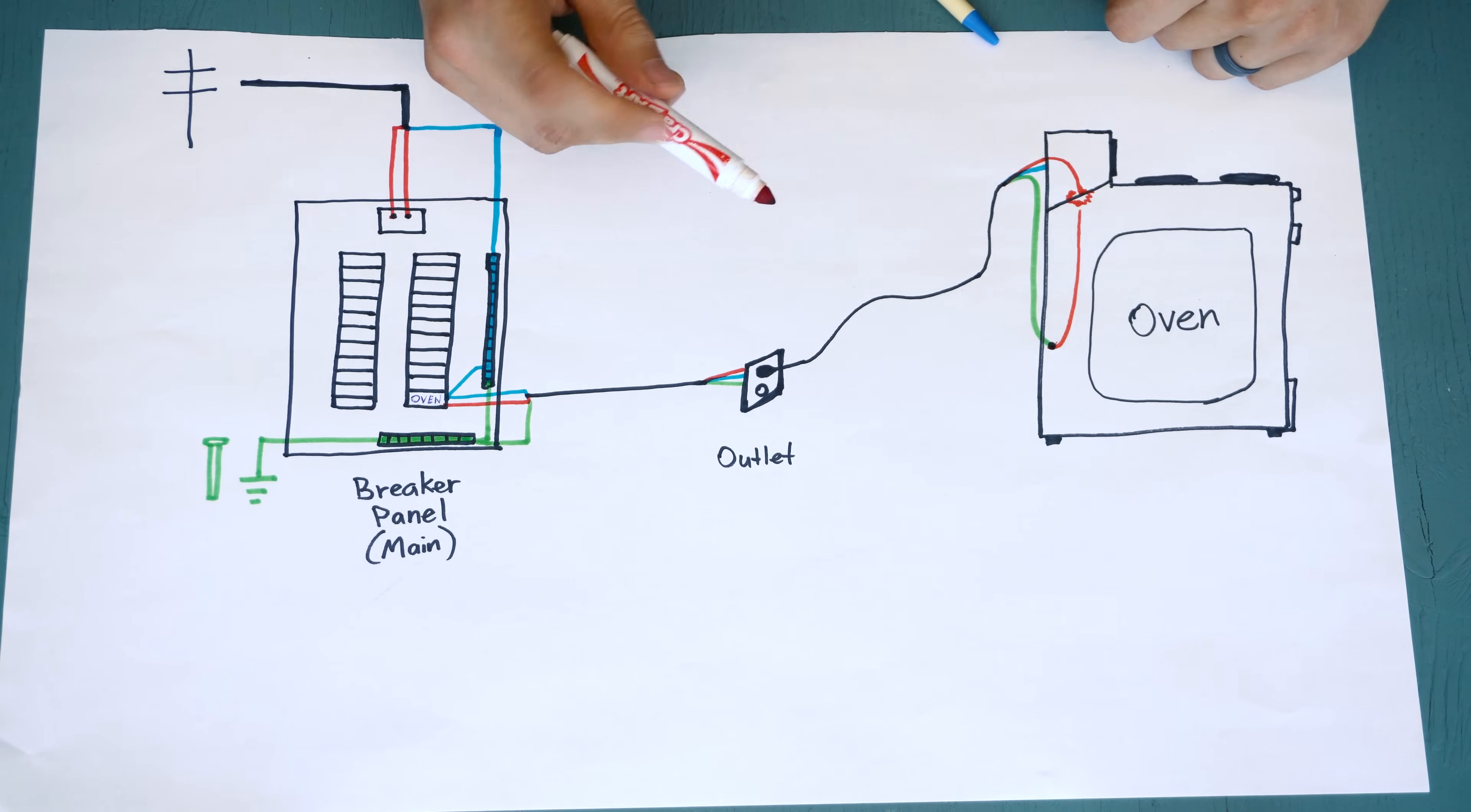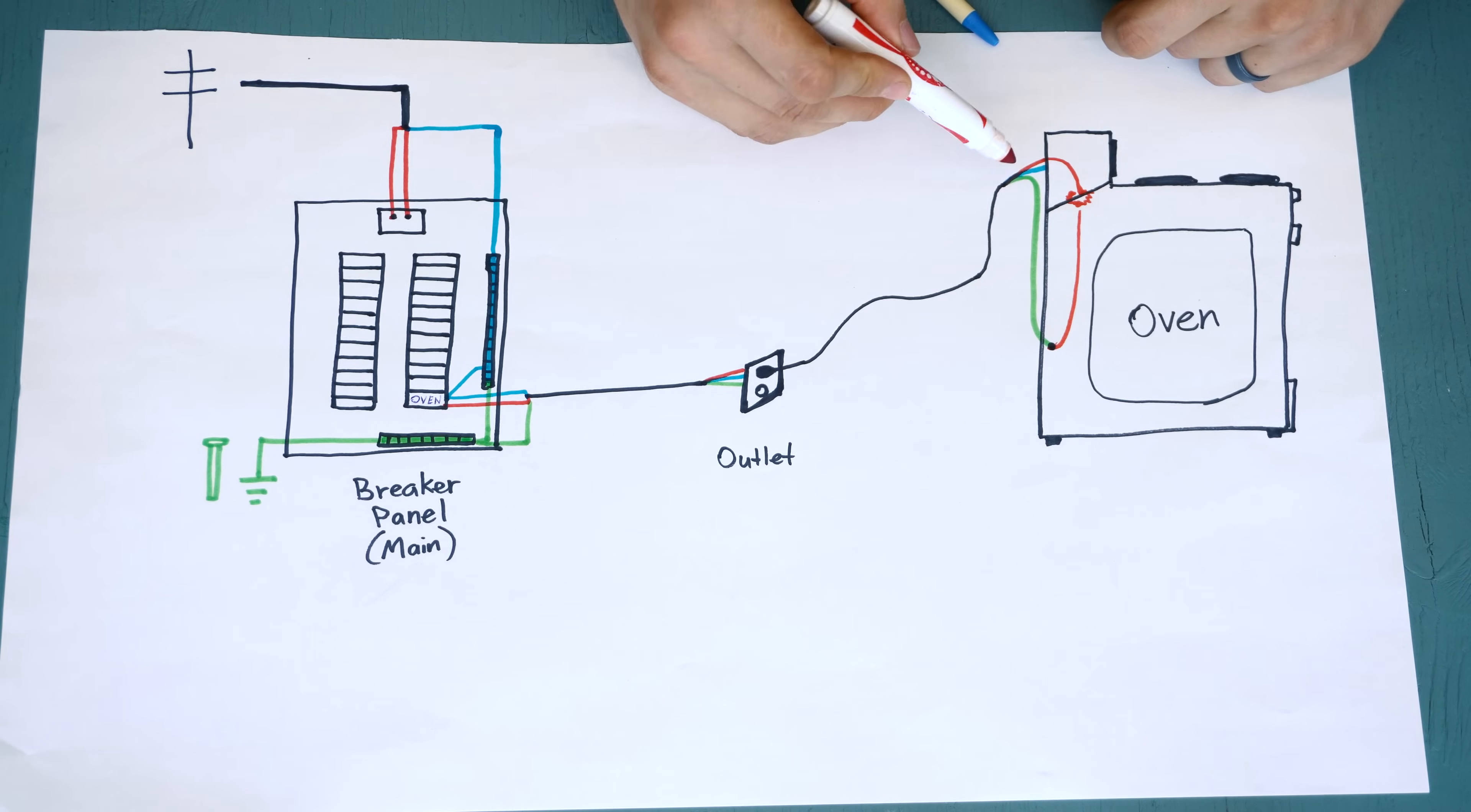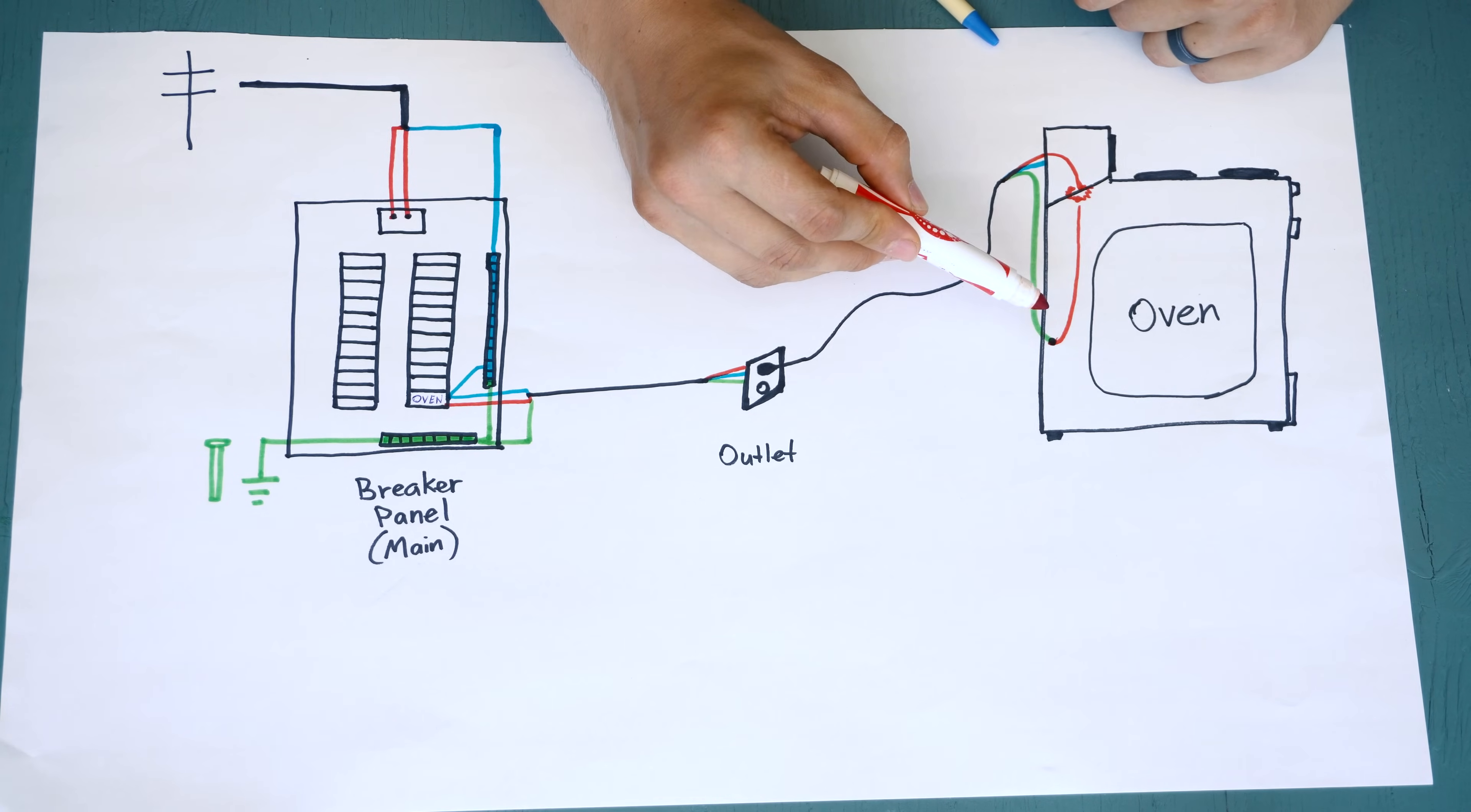And the frequent question people get is, can I use a ground as a neutral? And the answer is yes. Yes, but you really shouldn't, because the ground is a safety. So for example, you could disconnect this blue wire, or the white wire, the common, and instead hook up the green wire, and the appliance would work. But you effectively just removed that safety feature.